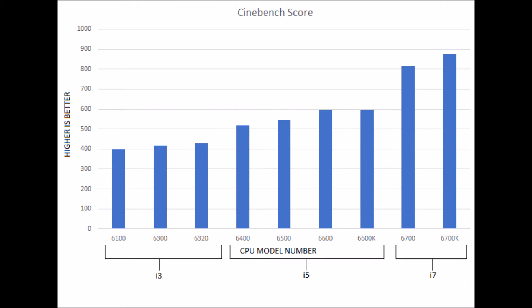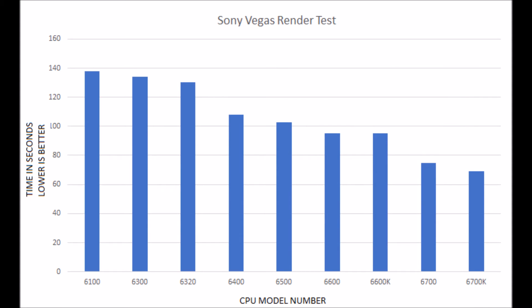How does this translate to something relatable? The next graph is a Sony Vegas render test. The same file is exported on all nine chips, and we see the exact same trend as in the Cinebench test — the i3s taking the longest, slowly becoming quicker with increased clock speeds, as well with the i5s, and once again the i7s being the quickest.